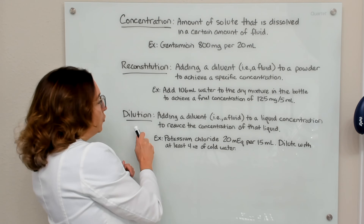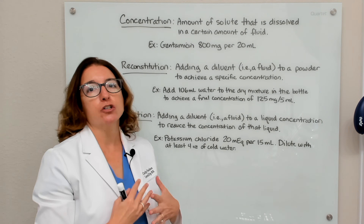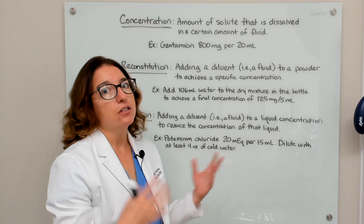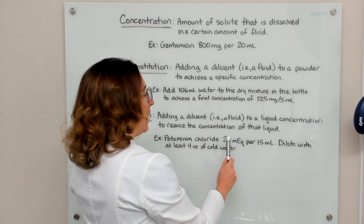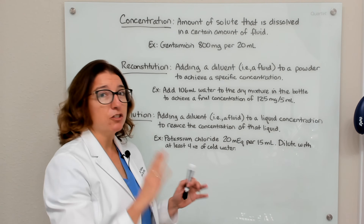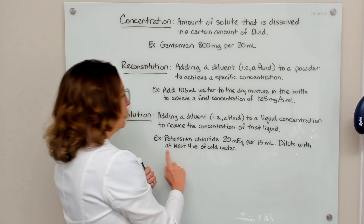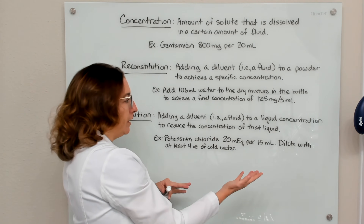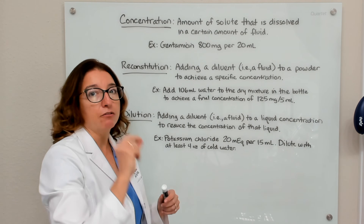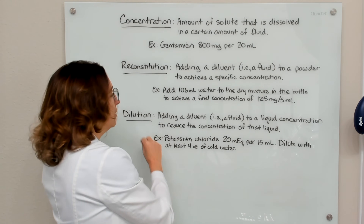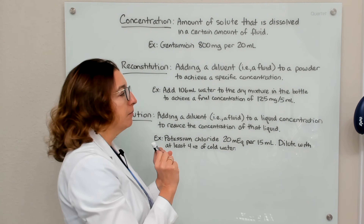Then we have dilution. This is where we add a diluent — a fluid — to a liquid concentration in order to reduce the concentration of that liquid. For example, potassium chloride comes in a bottle with a concentration of 20 mEq per 15 mL. But we don't want to administer that concentrated liquid to the patient directly. We need to dilute it with at least four ounces of cold water before we give it to the patient. So the difference between reconstitution and dilution: with reconstitution, we're adding fluid to a powder; with dilution, we are adding fluid to a liquid concentration to reduce it.